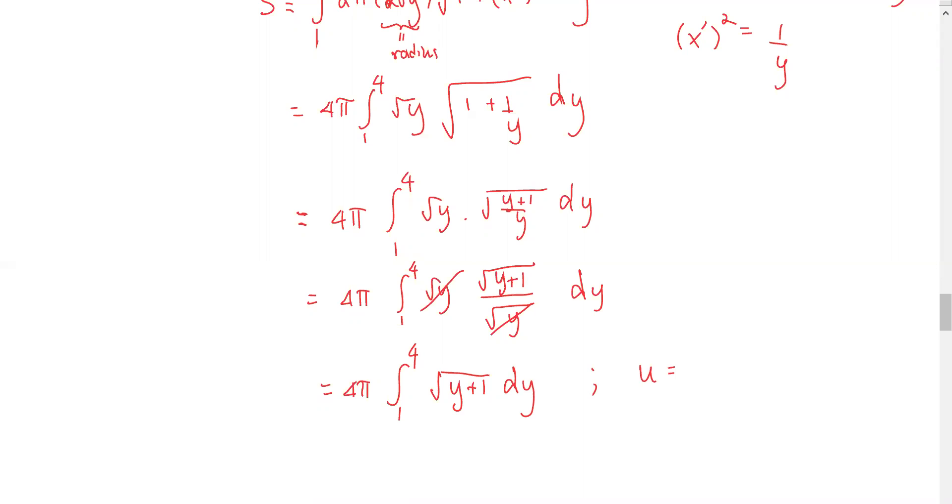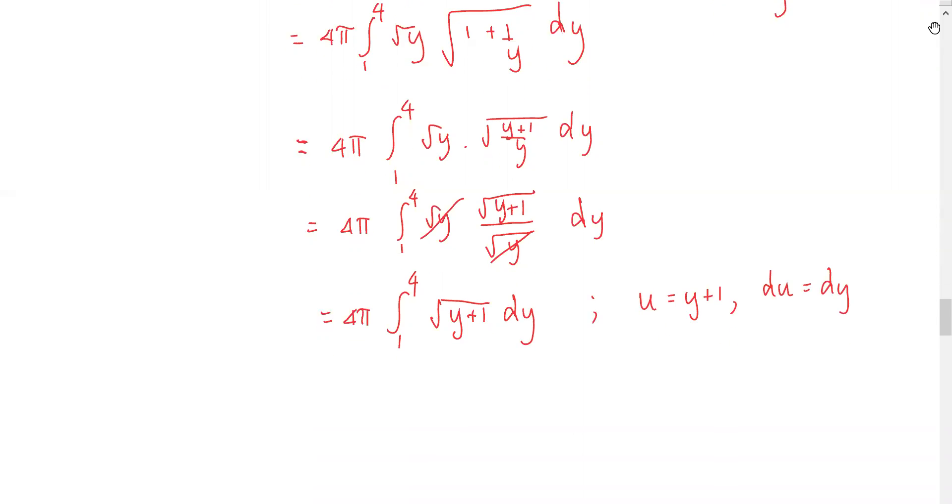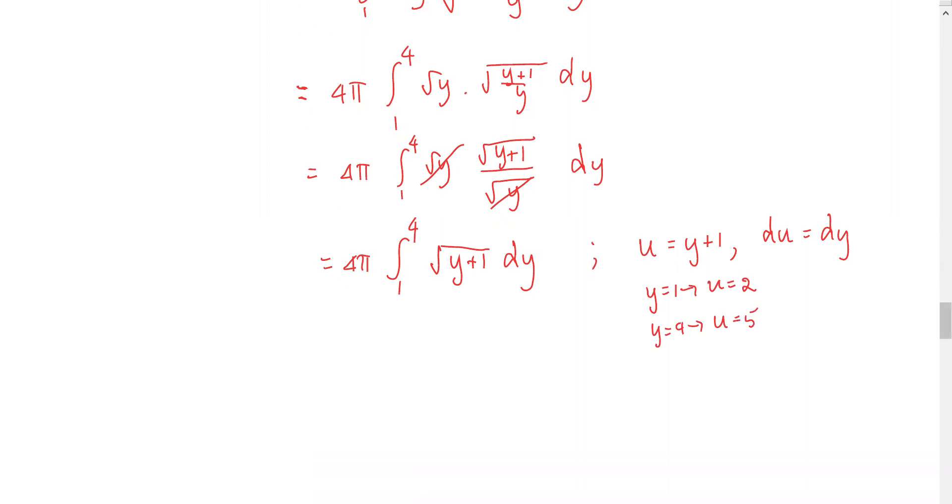Use the u substitution. Let u be y plus 1. Therefore, du is dy. As y equals 1, u equals 2. As y equals 4, u equals 5. So 4pi integral from 1 to 4 now becomes 2 to 5, and square root u replaces square root of y plus 1, du replaces dy.